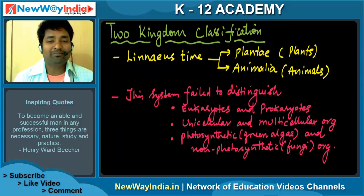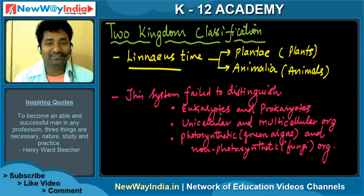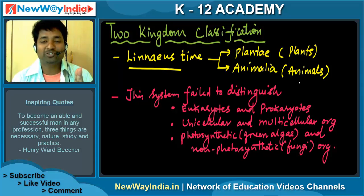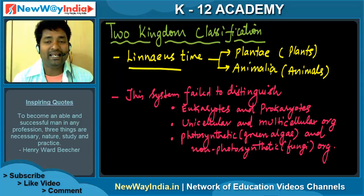Two Kingdom Classification was first given by Linnaeus. He divided all organisms into just two kingdoms: one is Plantae and one is Animalia. Plantae includes plants and Animalia includes animals.